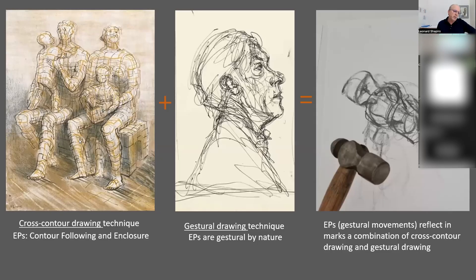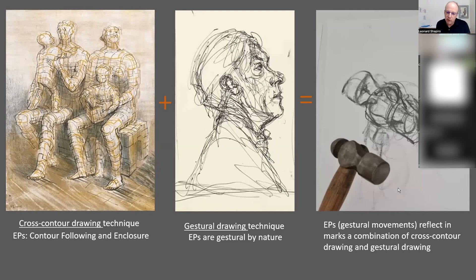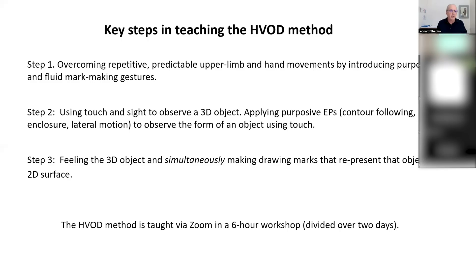We're all familiar with Henry Moore and Giacometti. This is an example of Henry Moore's cross contour drawing, and an example of Giacometti's gestural drawing. When we put those together in combination with exploratory procedure movements, we get what you see here — a kind of combination of both. So there are key steps in the teaching of this method.